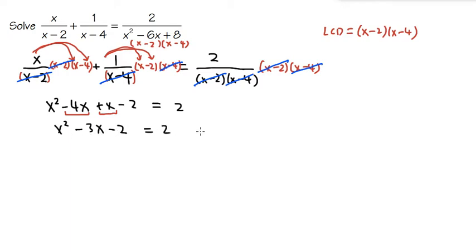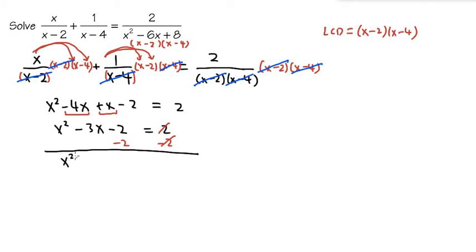Now we are going to make one side equal to 0, so we subtract 2 on both sides. The 2 on the right and the minus 2 in red will cancel each other out, and we get our 0. Here we will have x squared minus 3x, and negative 2 minus 2 is minus 4, and that equals 0.